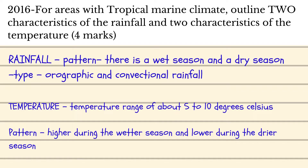For example, if you are talking about the rainfall pattern in tropical marine climates, you could talk about the fact that there is a wet season and a dry season. You could also state the time of year that we generally experience each season. You could also talk about the types of rainfall — orographic, which is the same as relief rainfall, as well as convectional rainfall.